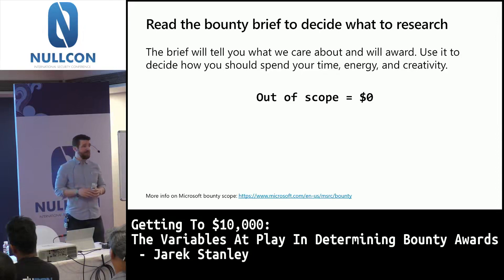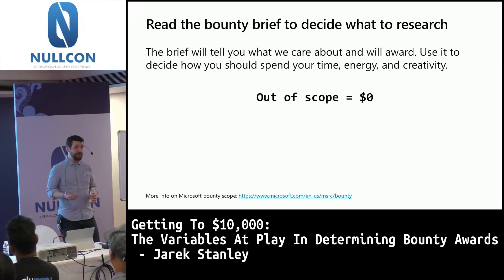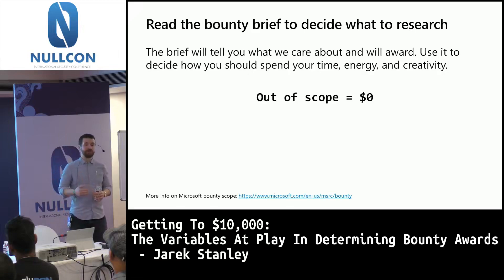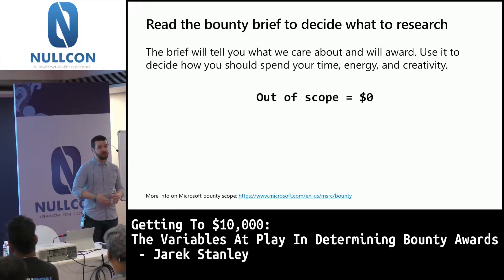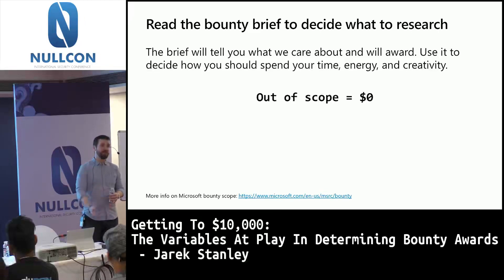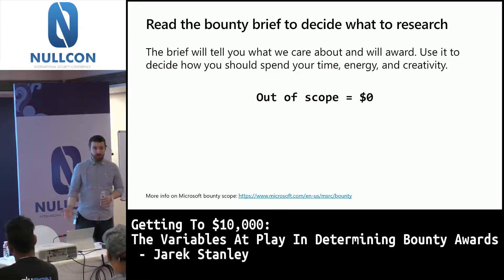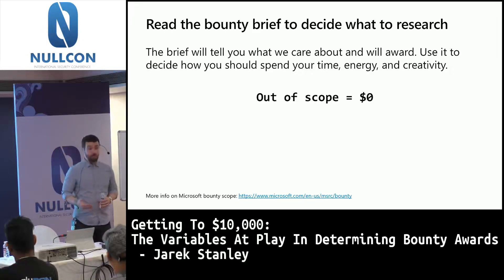Number one is read the bounty brief. We do as much as possible from an economics perspective — it's called limiting information disparity. I want you to know as much as possible what we value, what we reward, and what's in and out of scope. I'm investing the coming months to make that information easier to digest so you know where to target your energy and creativity, and what bounty awards are possible. Out-of-scope reports will earn no bounty, and we offer as much information upfront as we can to help you know what to expect.